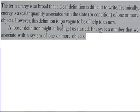Then they go on to say that energy is too vague to be of help — indeed, it is a useless definition. So they give us a more workable, looser definition: energy is a number that we associate with the system of one or more objects. I personally feel they should not have attempted to define energy at all.